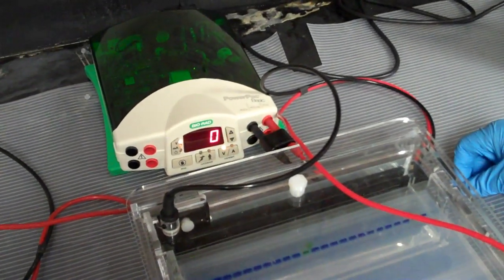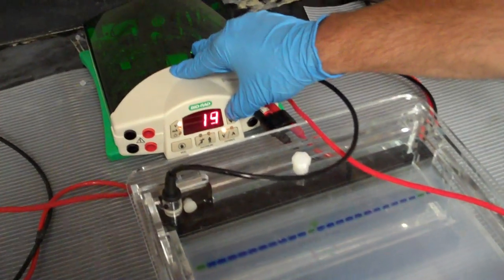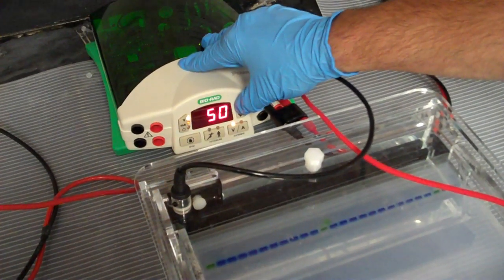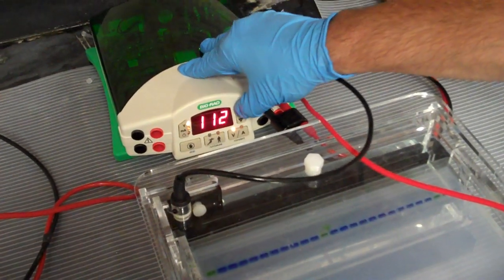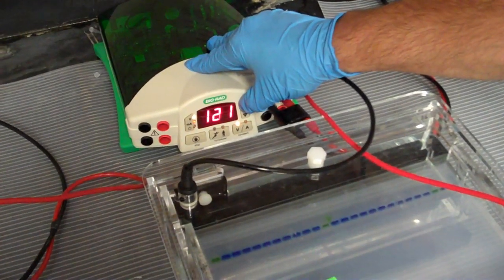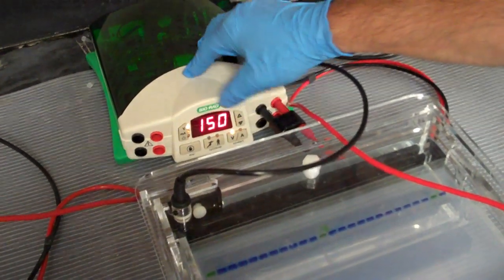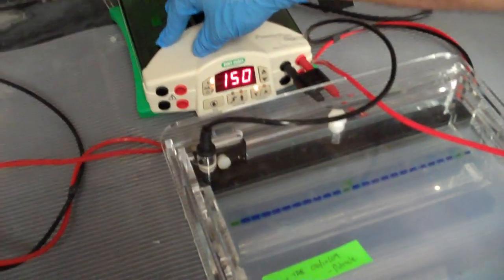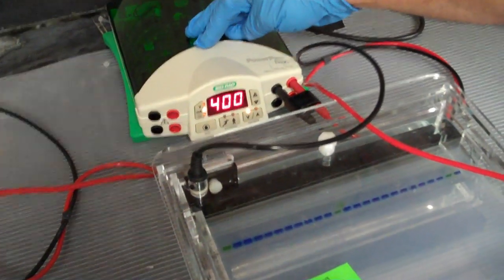Now adjust your voltage. Typically gels are run at 150 voltage. Now adjust your amps. Amps are always run at 400.